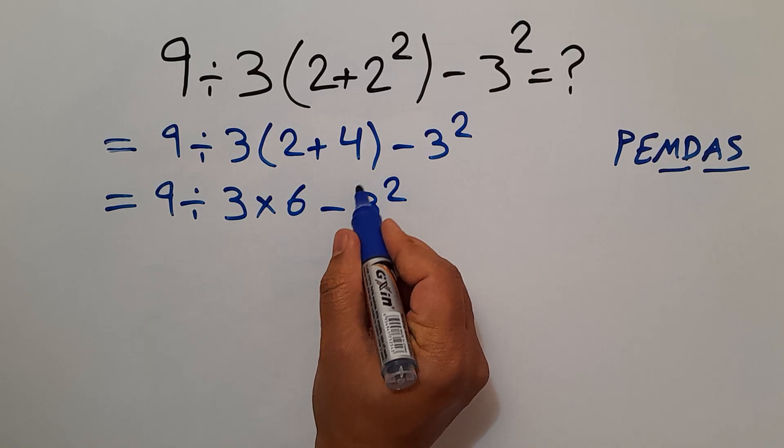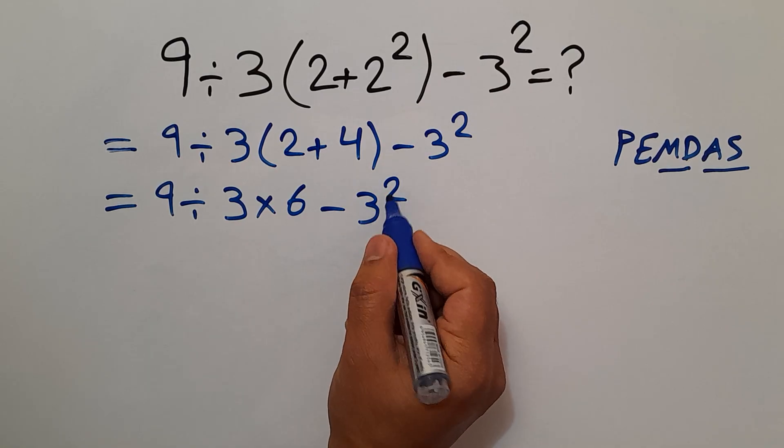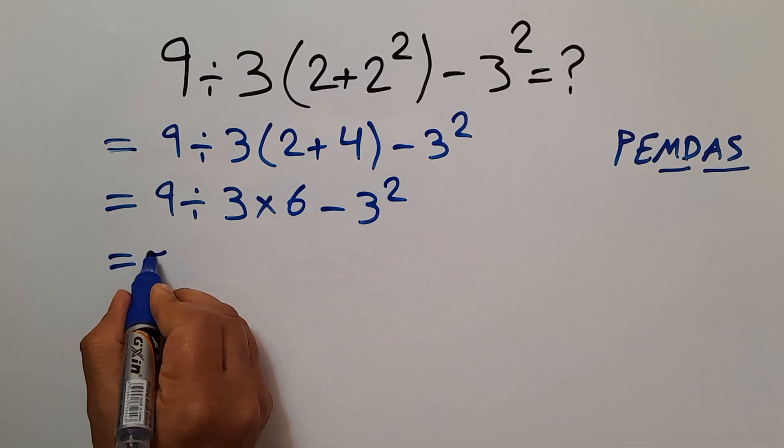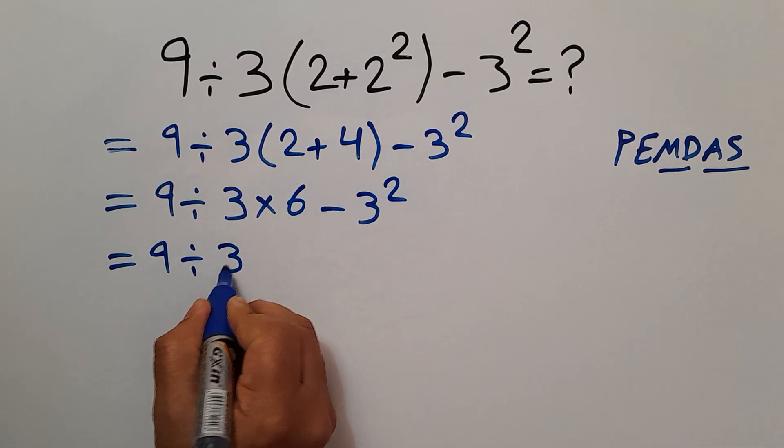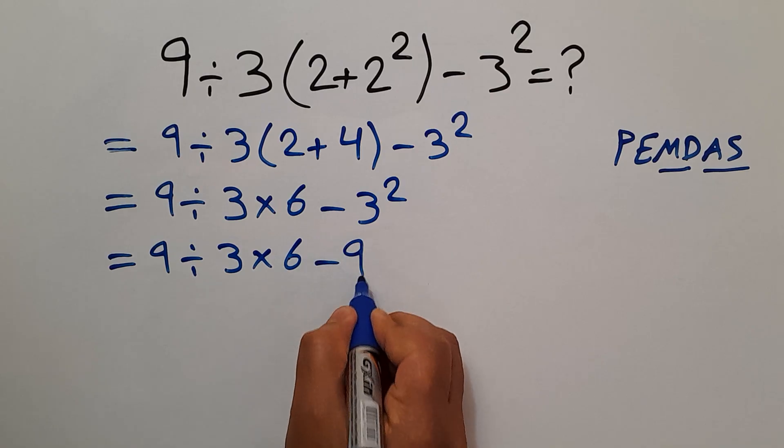Now we have to handle this exponent. 3 squared gives us 9, so 9 divided by 3 times 6 minus 9.